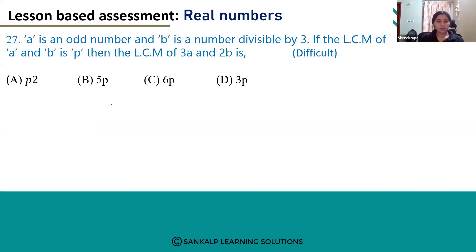So they have given A is an odd number and B is divisible by 3. It is a number divisible by 3, and LCM of A and B is P.